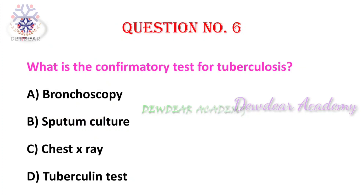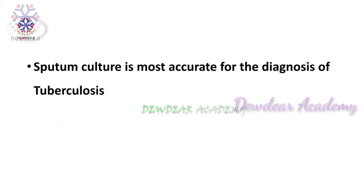Question 6: what is the confirmatory test for tuberculosis? Options: bronchoscopy, sputum culture, chest X-ray, tuberculin test. The right answer is sputum culture. Even though X-ray findings, skin test, and tuberculin test provide presumptive diagnosis, the final diagnosis is confirmed by identification of the organism on sputum culture, making it the most accurate test for diagnosis of tuberculosis.